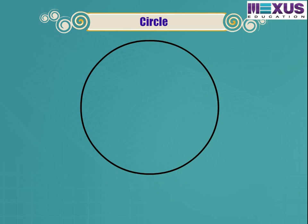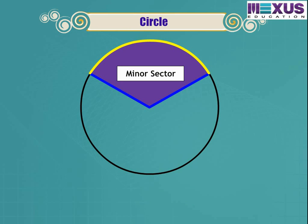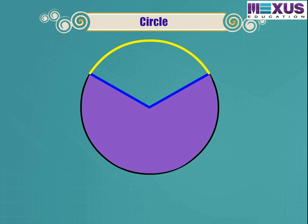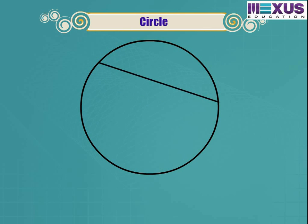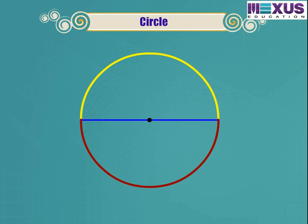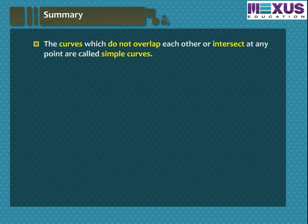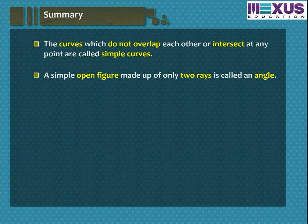The region in the interior of the circle enclosed by the boundary is called the circular region. The region enclosed by an arc and two radii is called a sector of the circle. The region with the minor part is called the minor sector, and the region with the major part is called the major sector. The region enclosed by an arc and a chord is called a segment of a circle, which is divided into major segment and minor segment. The region enclosed by an arc and a diameter is a semicircular region. Let us summarize all that we learned in this module on open and closed figures.